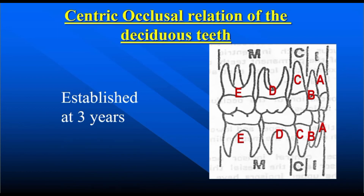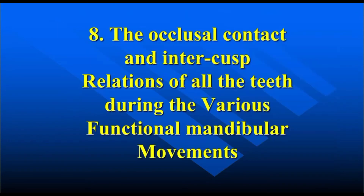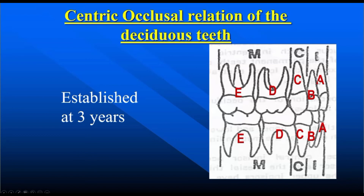Centric occlusion relation of the deciduous teeth is established by 3 years, because all deciduous teeth erupt by age 2.5 to 3 years. Similarly, the buccal cusps or incisal edges of upper teeth cover lower teeth buccally and distally. We will not go into details of deciduous occlusion as it is less clinically relevant here.